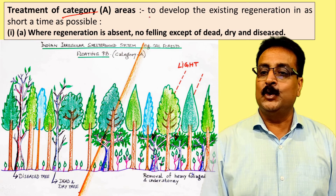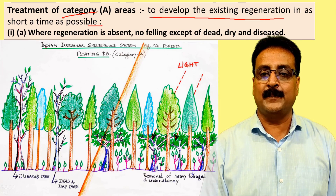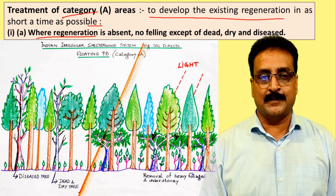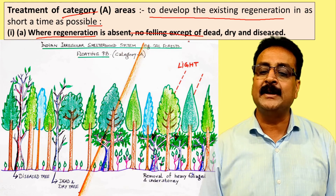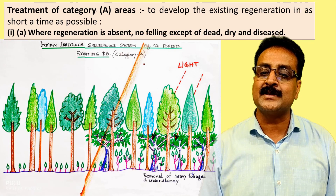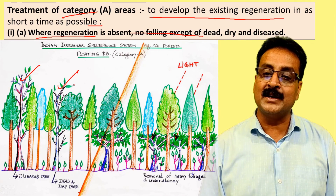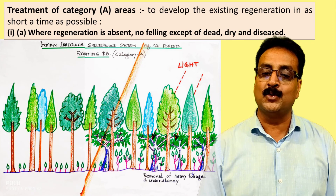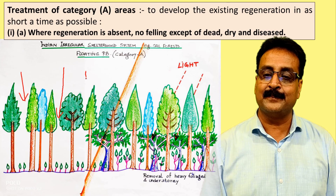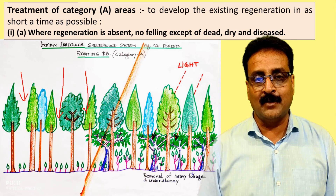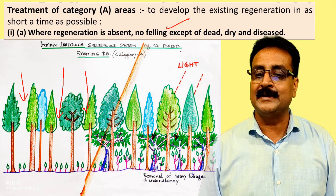Category A aims to develop the existing regeneration in as short a time as possible. Where regeneration is totally absent, no felling will be done except for dead, dying, and diseased trees. Only those dead, dying, and diseased trees will be felled. Once removed, light will enter the floating periodic block in those gaps.